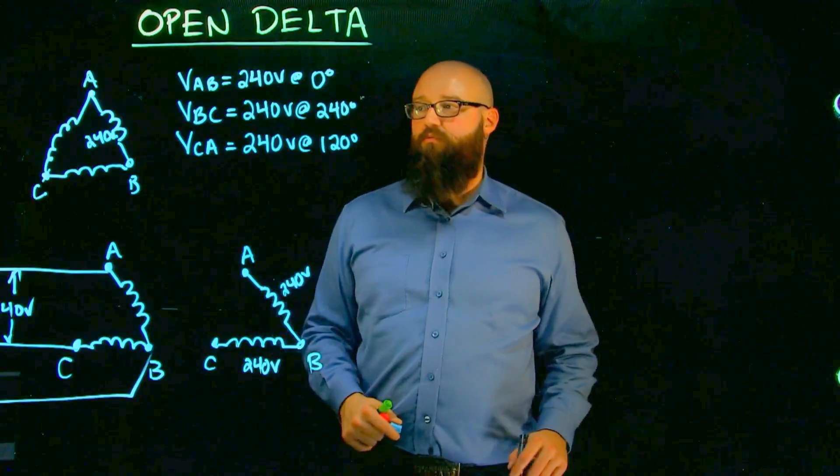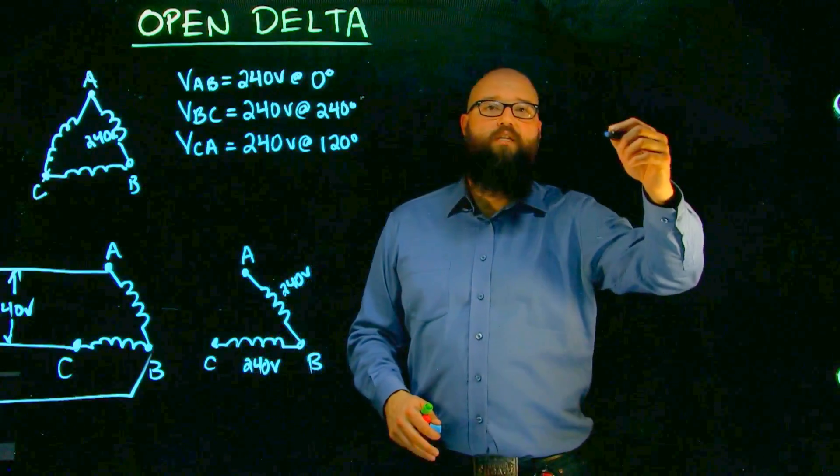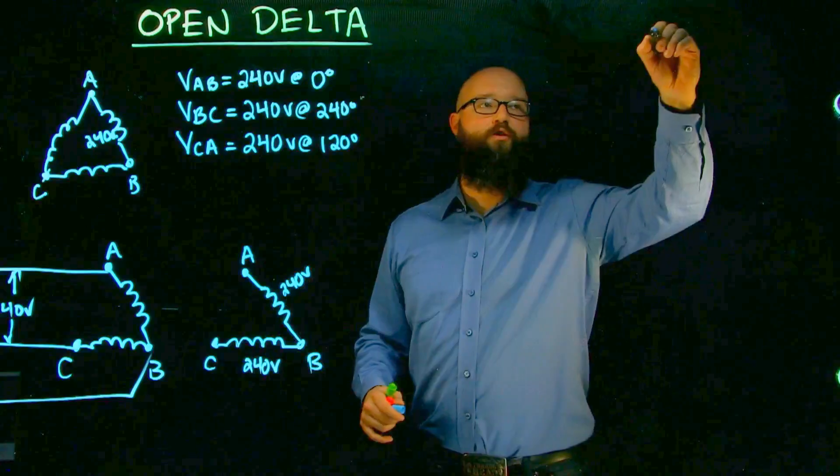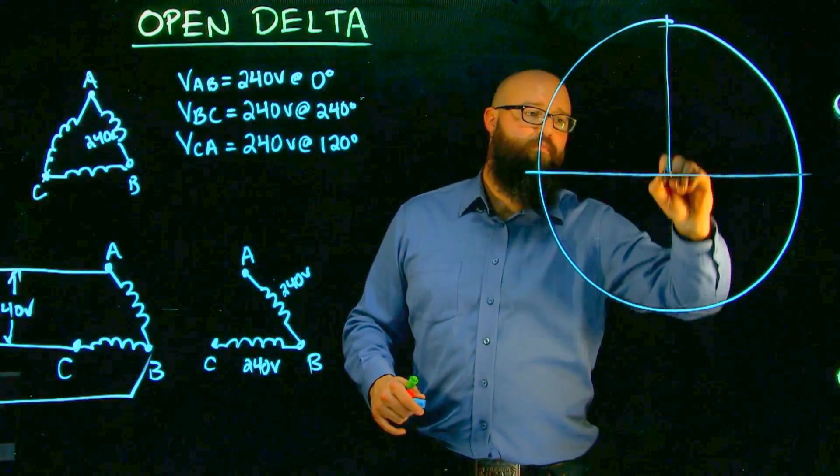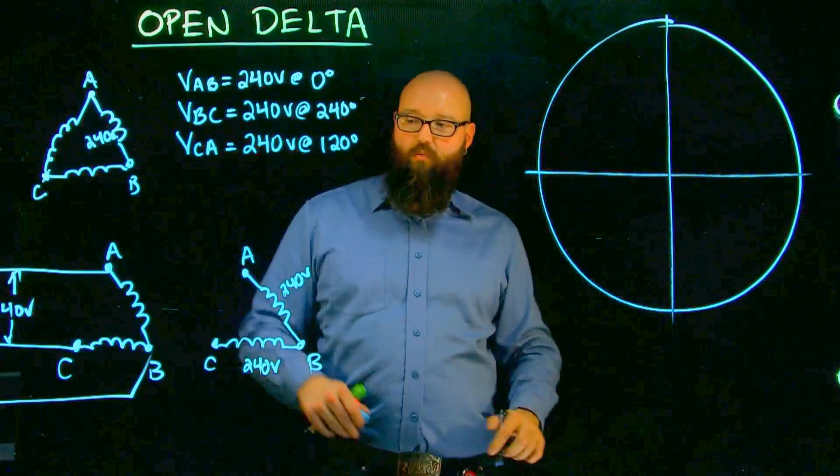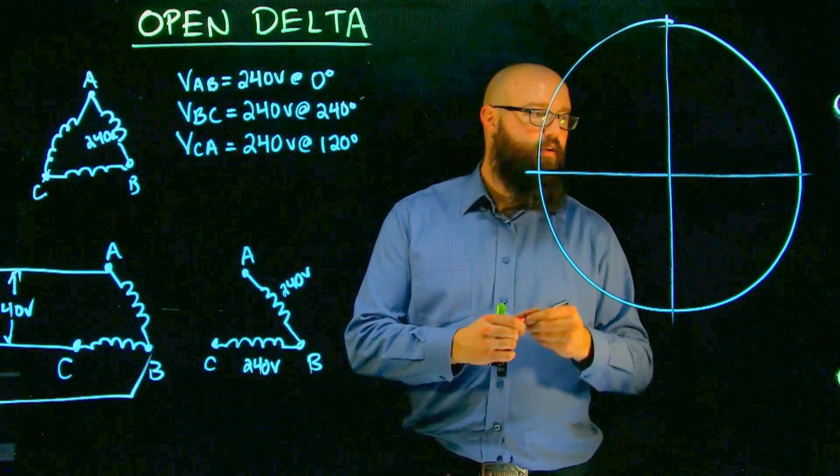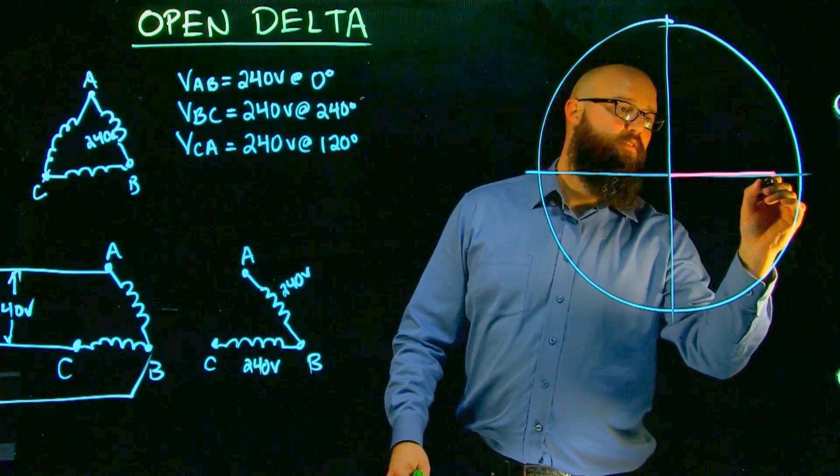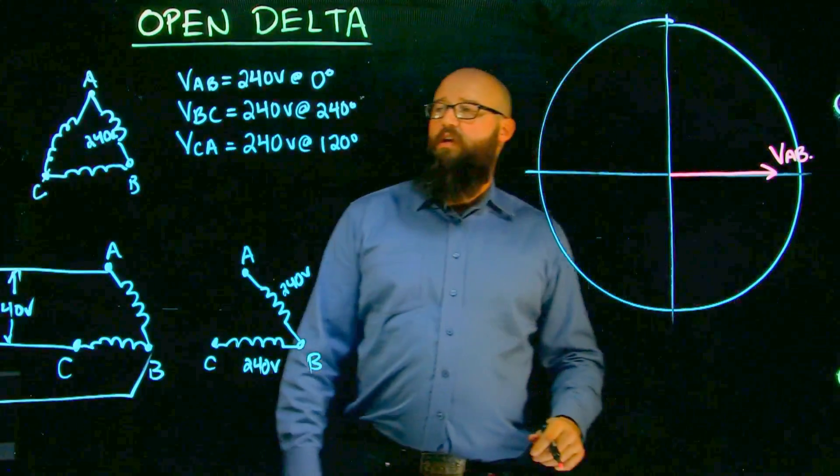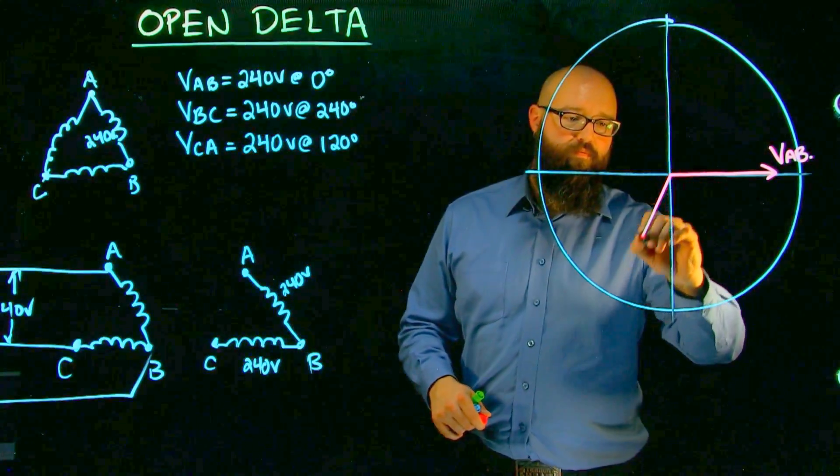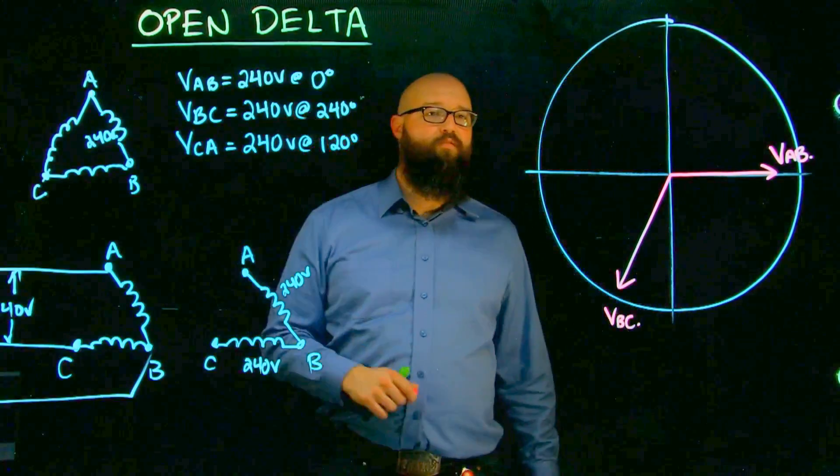We're going to take our Cartesian plane. I'm not going to go through an H-V chart, but you're more than welcome to on your own. We said we still have our V A to B, which is at 0 degrees. There's my V A to B, and I still have my V B to C, which is at 240 degrees.